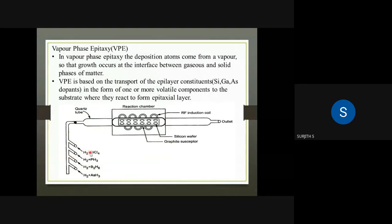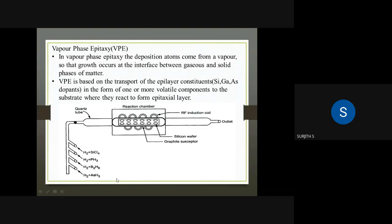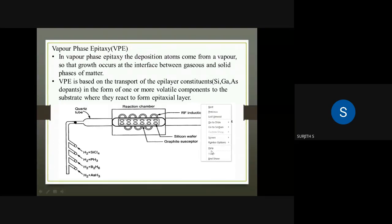We use SiCl₄ and H₂. For doping, we use PH₃, B₂H₆, and AsH₃ gases. In our application, we can deposit an intrinsic silicon layer or a P-type or N-type silicon layer on a silicon substrate.